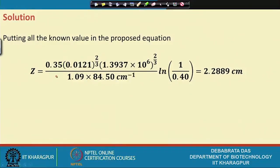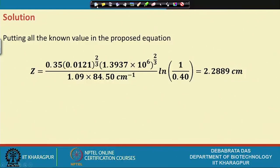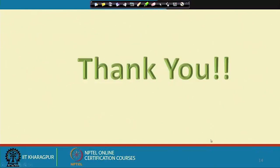Substituting all values into Satterfield's equation, the height of the column Z comes out to approximately 2.2889 cm. This is how we can determine the height of an immobilized enzyme column.